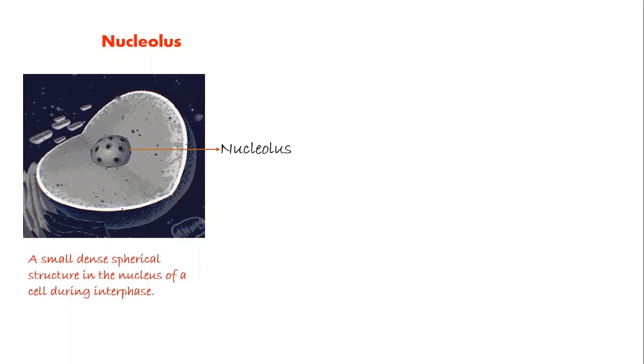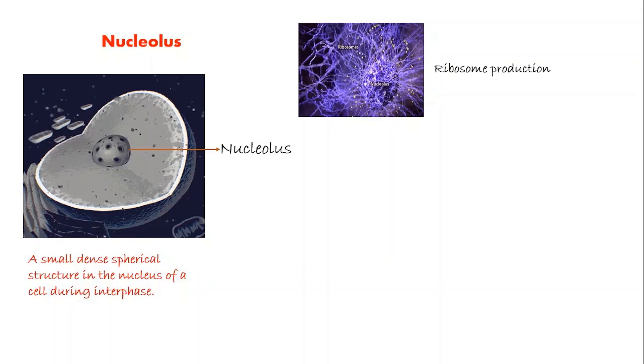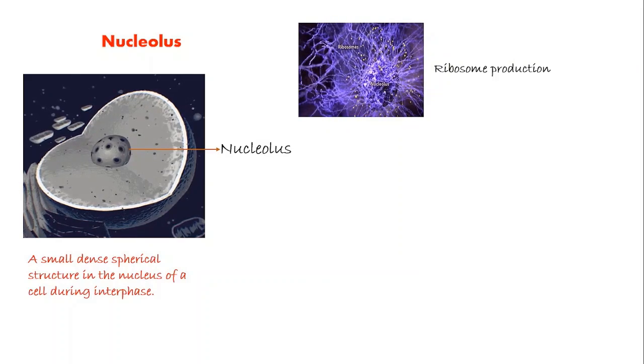During cell division mitosis, the nucleolus breaks up only to reform from specific sections of the chromosomes after mitosis. Although the nucleolus is the most prominent structure of the nucleus, its size is largely dependent on the level of ribosome production, as well as the different types of molecular processes that occur in the nucleus.